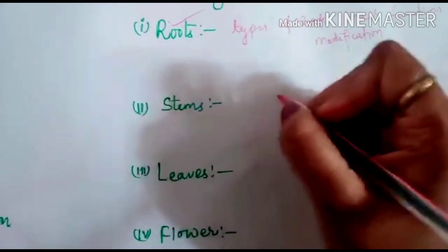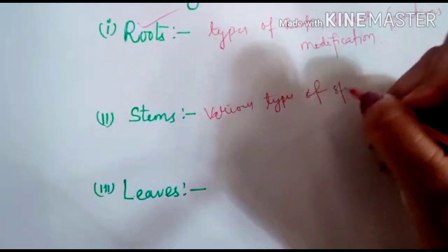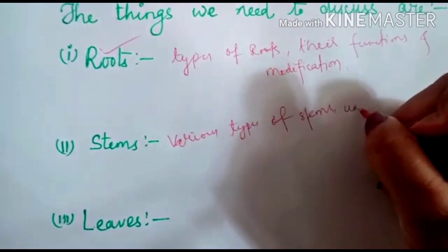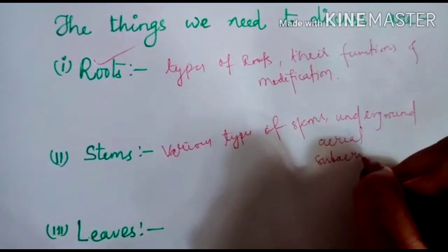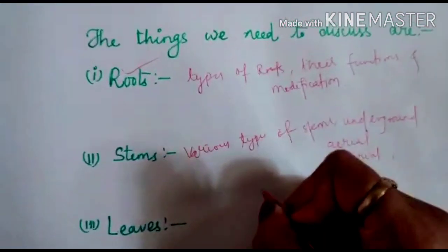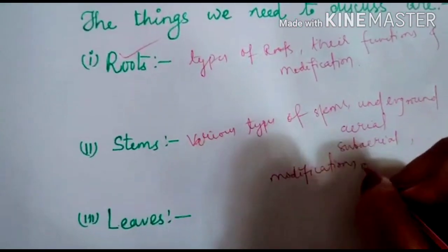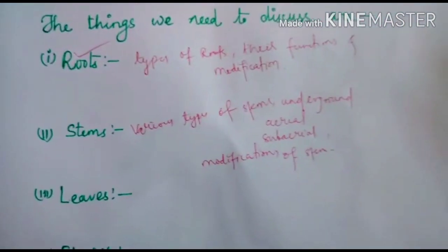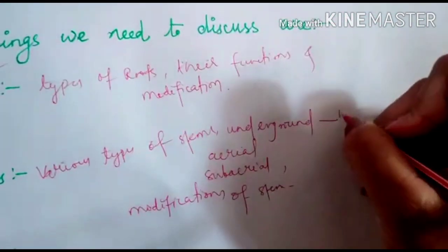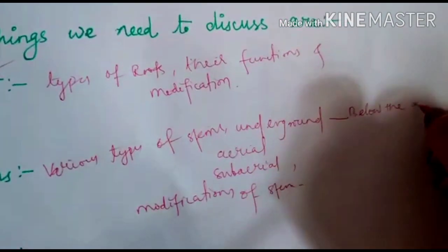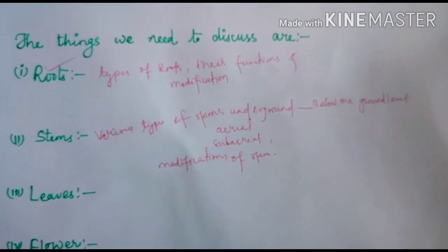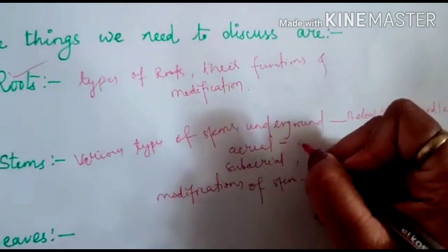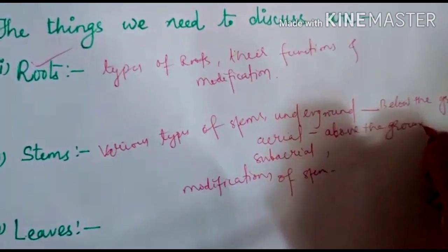Then the stems — we will look at various types of stems: whether they are underground (growing below the ground level), aerial (growing above the ground surface), or sub-aerial. We will also discuss the modifications of the stem.